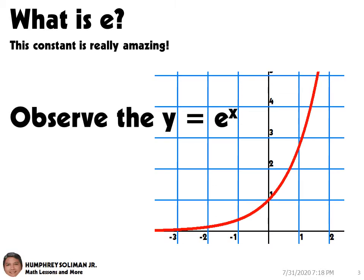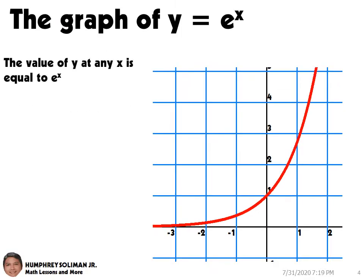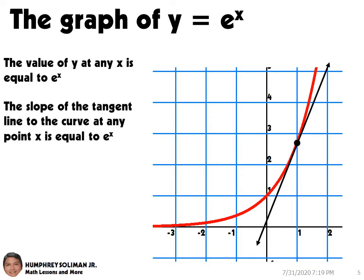Observe the graph of Y equals E raised to X. Here, the value of Y at any value of X is equal to E raised to X. And the slope of the tangent line to the curve at any given point X is equal to E raised to X.